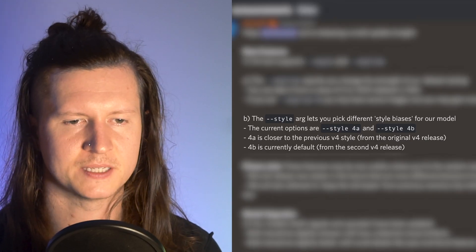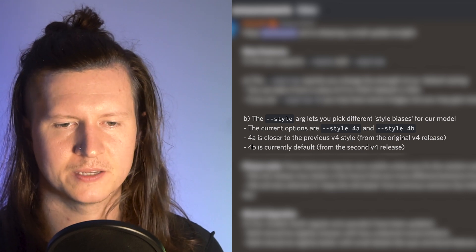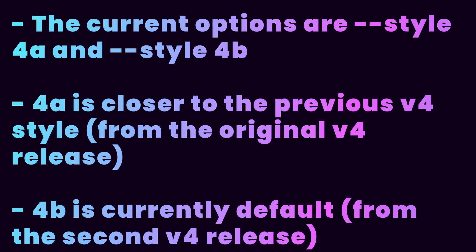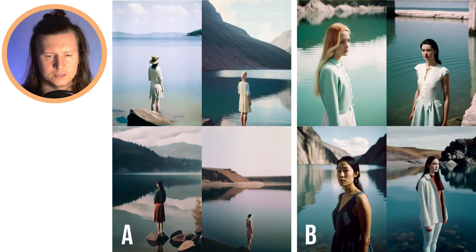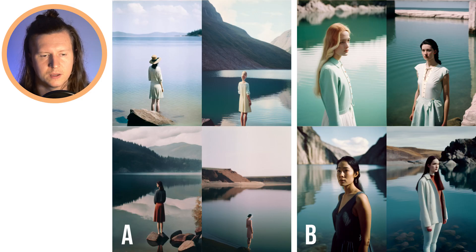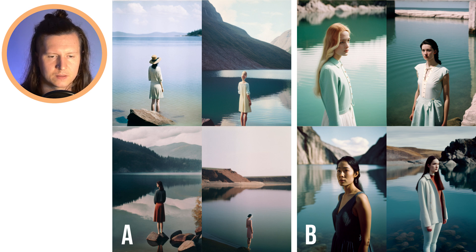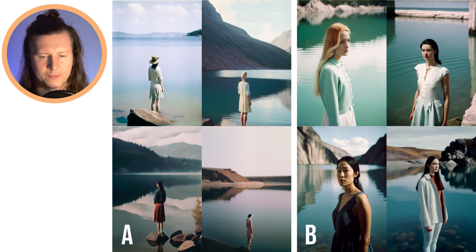The next exciting development is the style argument, which allows you to pick style biases from their model. There are two options currently available: 4a and 4b. By just appending these parameters at the end of your prompt you'll get slightly different results, but it's important to also include a C here to see the differences. Style A certainly gave a much more zoomed out painterly feel while style B gave a more documentary film aesthetic.